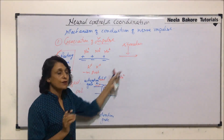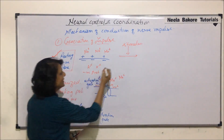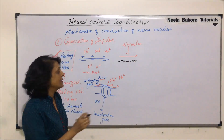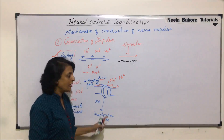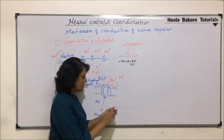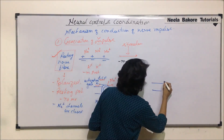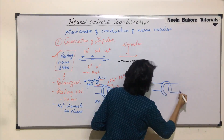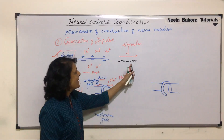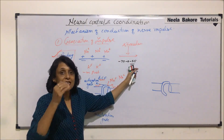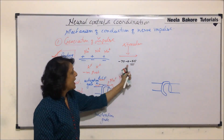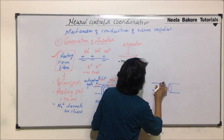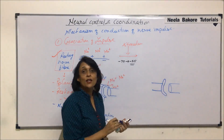When the stimulus is received, the potential changes from minus 70 to minus 55 millivolts. As soon as the potential changes to minus 55, these sodium channels open. Now, on this membrane, the voltage has changed to minus 55, and what is causing this change is the stimulus the membrane has received. As soon as it comes to minus 55, the channel opens and entry of sodium ions becomes possible.